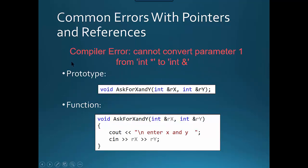Another error you can see is 'cannot convert parameter 1 from int asterisk to int ampersand'. Often when you see these errors, you just bypass reading them. Make sure you read the error. When you read these in C++, you really need to look at the symbology, because this error means it can't convert from a pointer to a reference.